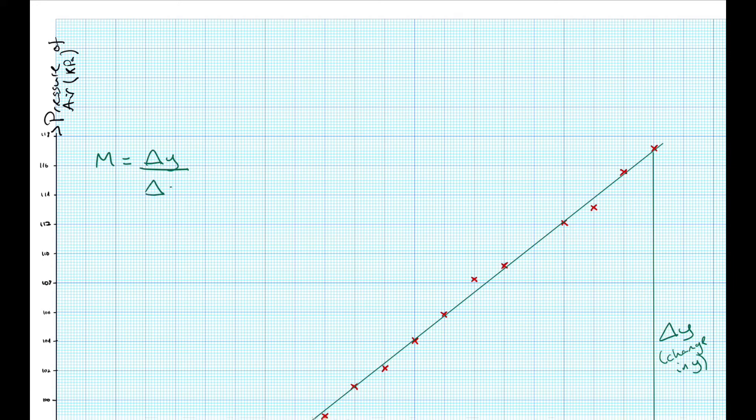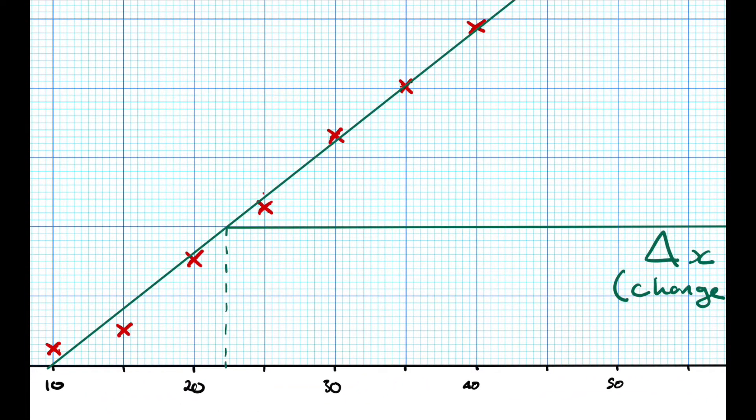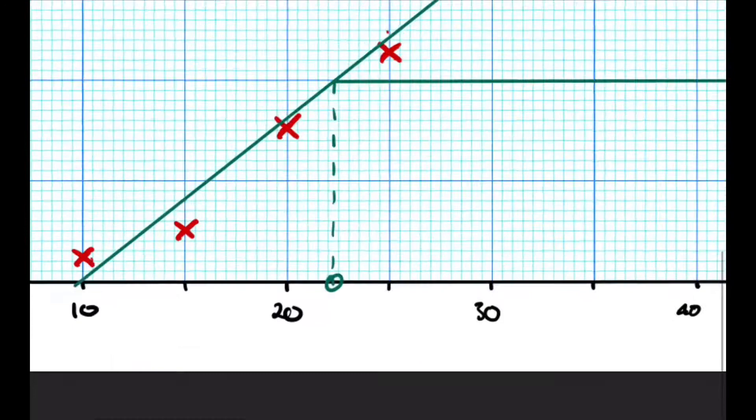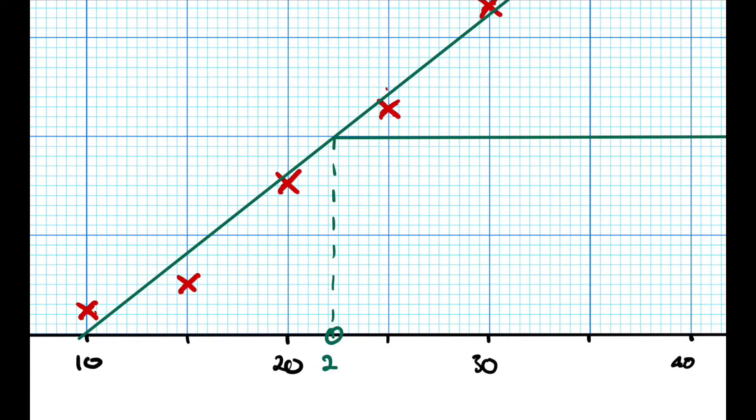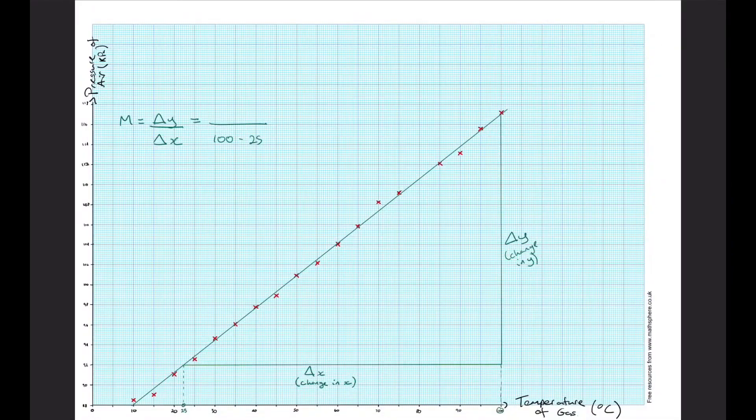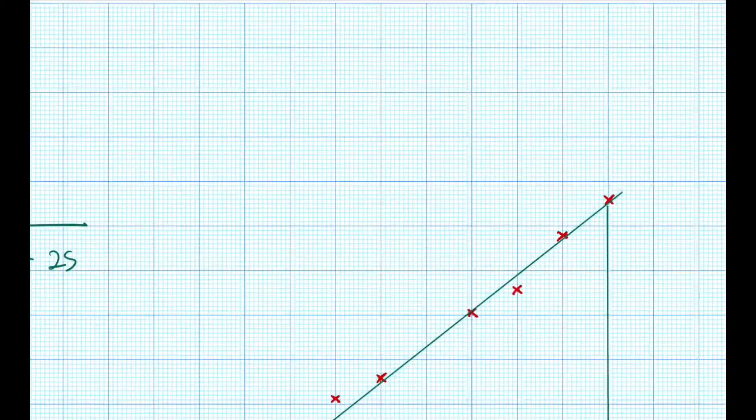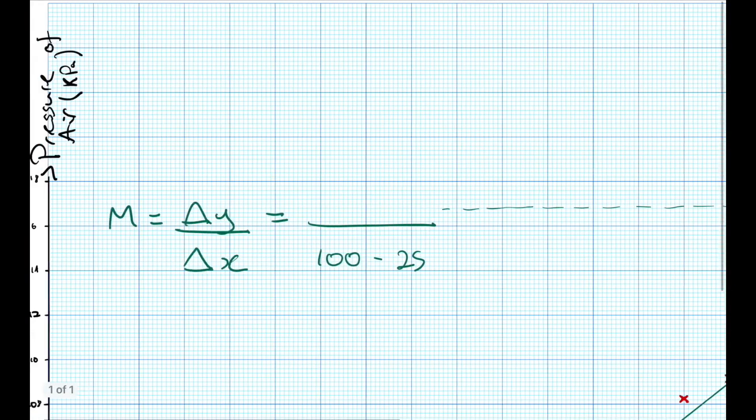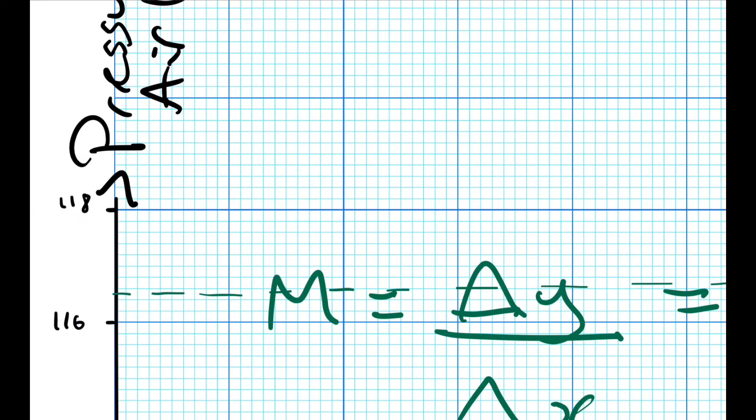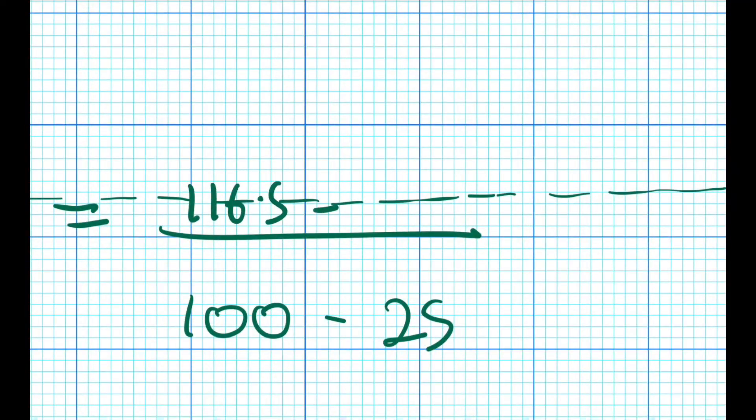The change in x is found by drawing vertical lines down to the x axis from the point where the triangle meets the line of best fit and finding the difference between the two numbers. In this case it will be 100 minus 25 to give us the change in x. The change in y is found in a similar way, this time it's horizontal lines to the y axis making note of the two numbers there and finding the difference.